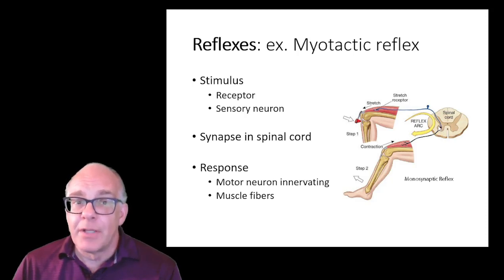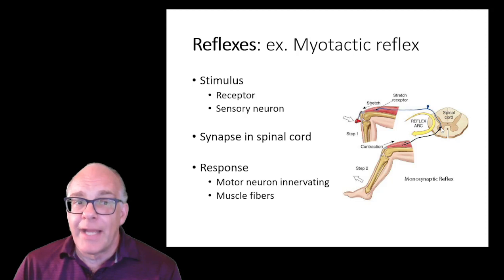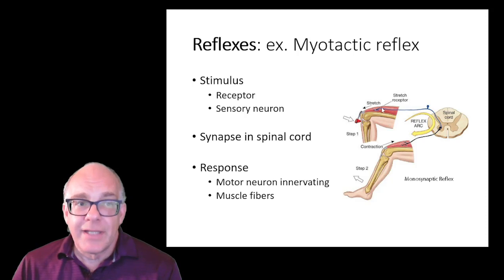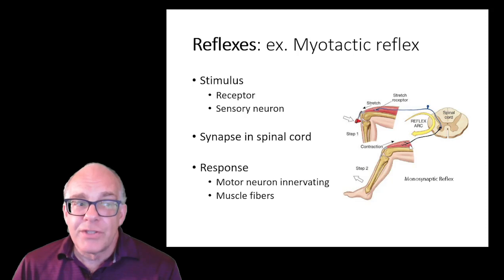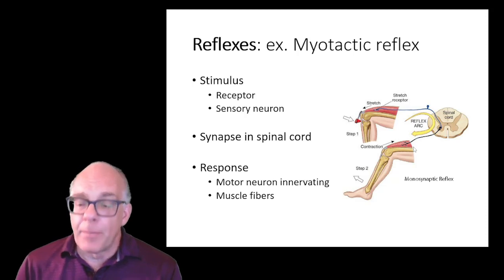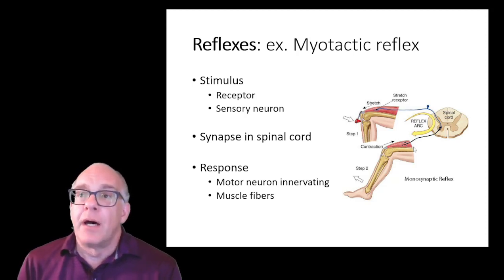That synapse is located within the spinal cord. The stimulus activates the sensory neuron, which releases its neurotransmitter, activating the motor neuron. The motor neuron, as the effector, goes out and innervates the muscle that was stretched. Since the stimulus was stretching the muscle and stretching the stretch receptor, the response is contraction of the muscle — shortening it. This gives us an example of a very simple reflex arc.